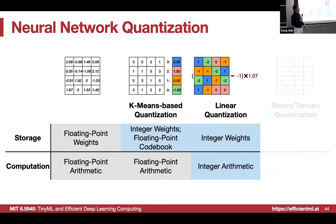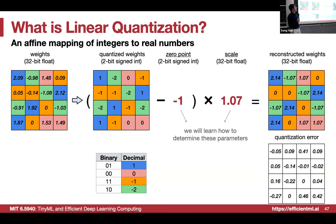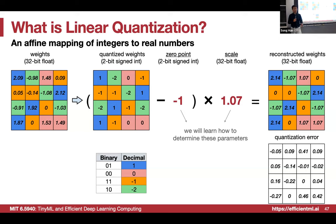The next chapter is linear quantization: integer weights with integer arithmetic, rather than integer weights with floating point arithmetic. Same example — a 4×4 FP32 matrix — now quantized to 2 bits: binary representations from 11, 10, 00, 01 representing −2, −1, 0, 1. The key difference from K-means: the values are equally spaced — linear quantization has less flexibility than arbitrary codebook quantization, but it's easier to decode with a linear mapping.